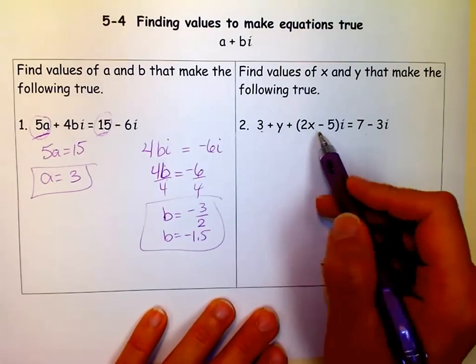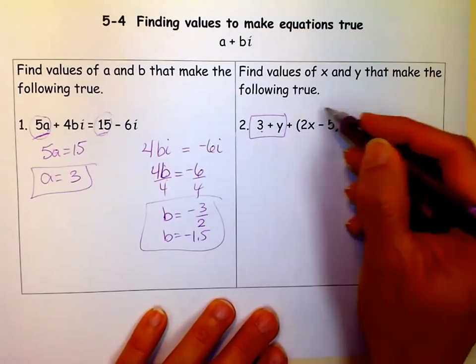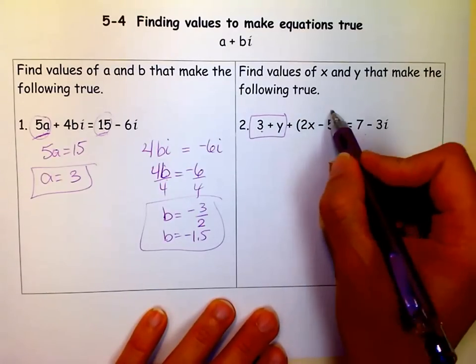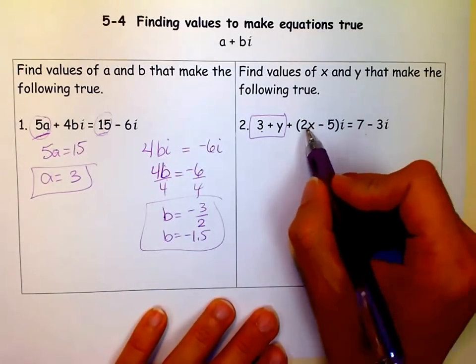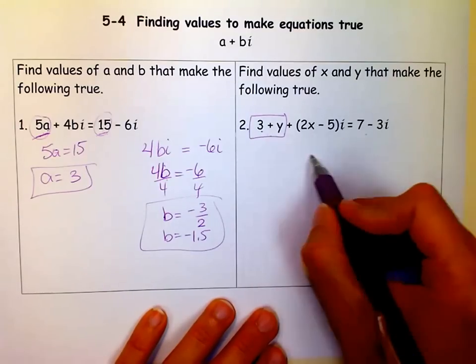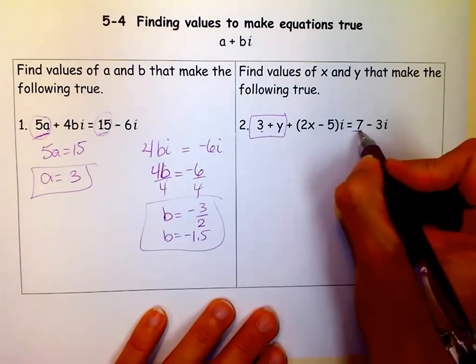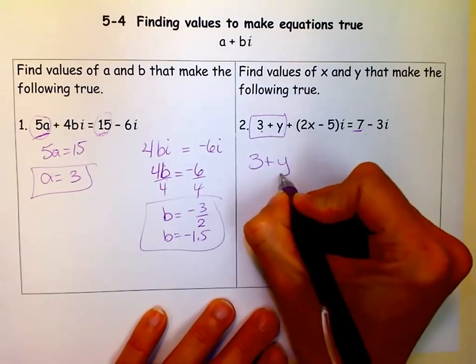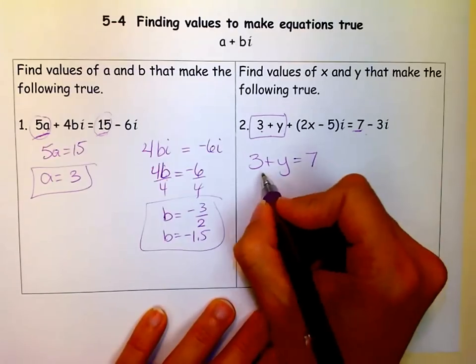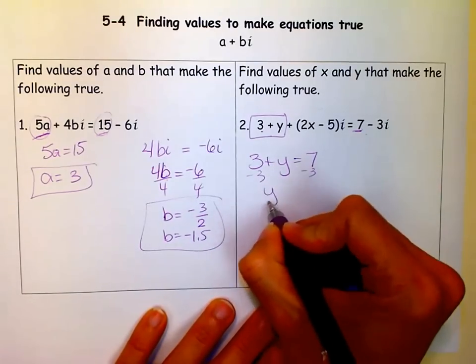You see a lot of things over here, but this has to be the real part because the I is on this binomial. So we know that this is equal to the real part. We look and see what our real part is over here, and it's 7. So we know that 3 plus Y must equal 7. If we minus 3 from both sides, we get that Y equals 4.